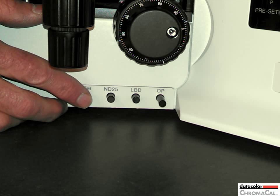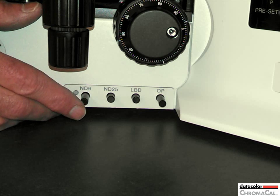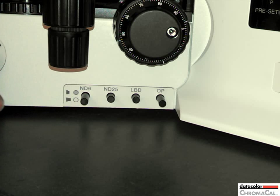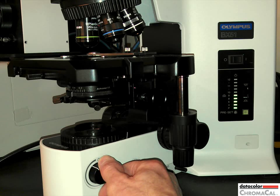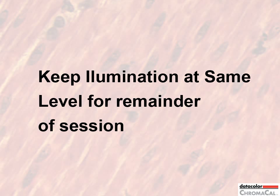On your microscope you may need to use a slider or some other method. If you don't have neutral density filters, adjust by hand. Keep illumination level at the same levels for the remainder of steps.